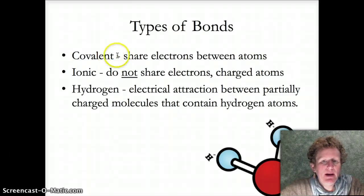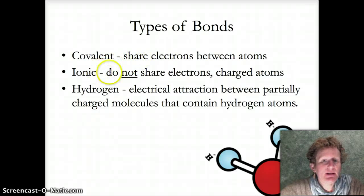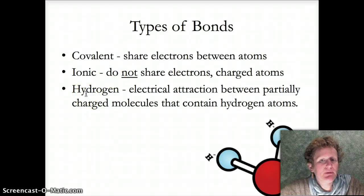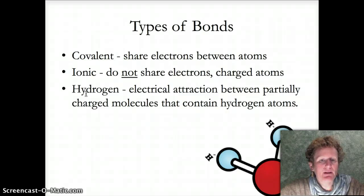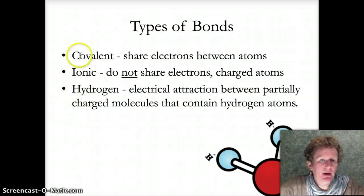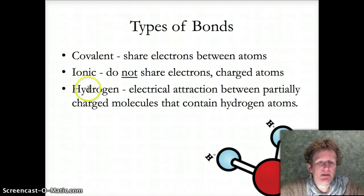There are covalent bonds that share electrons, ionic bonds that do not share electrons, and hydrogen bonds that don't happen between atoms — they happen between molecules. So they're a little bit different. Covalent and ionic bonds happen between atoms; hydrogen bonds happen between molecules.